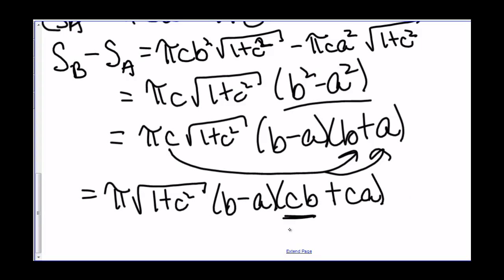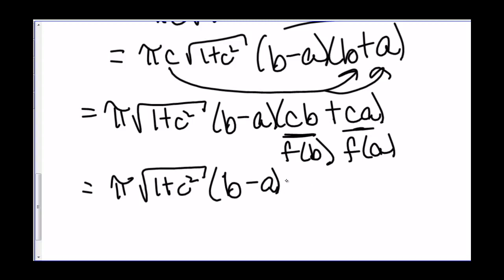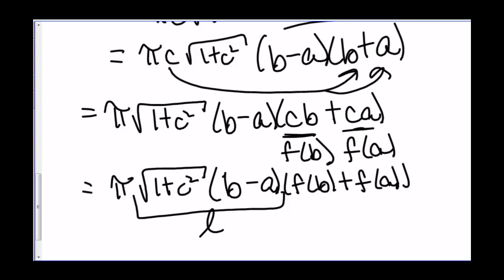You'll notice that c times b is f of b, and c times a is f of a. And with some further manipulation, you'll find that this part is equal to the length L. So again, we have π times our radius times the length of L.